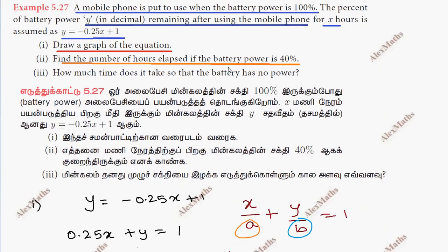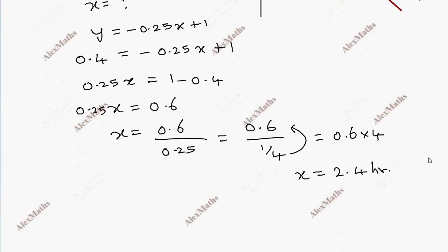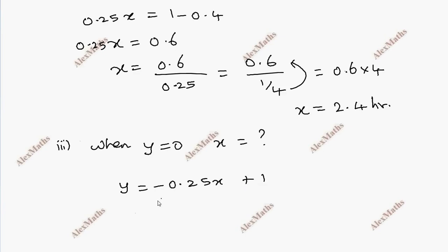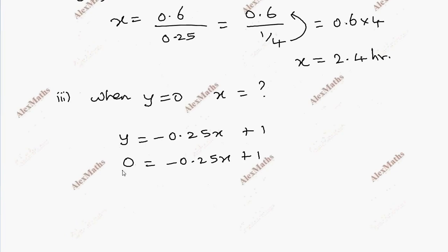How much time does it take so that the battery has no power? For part 3: when y is equal to 0, we substitute into the equation y equal to minus 0.25x plus 1. If y is equal to 0, solve for x.